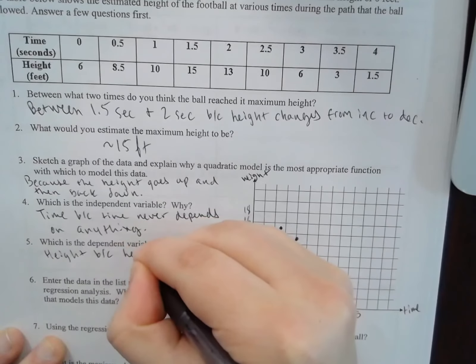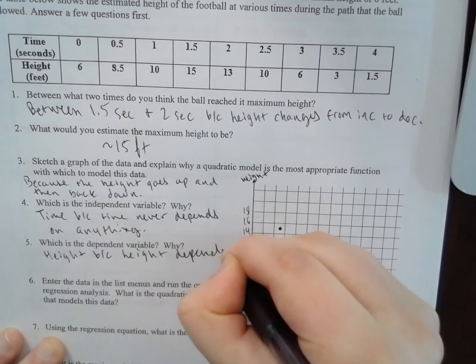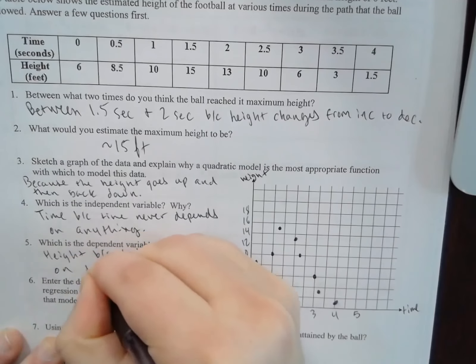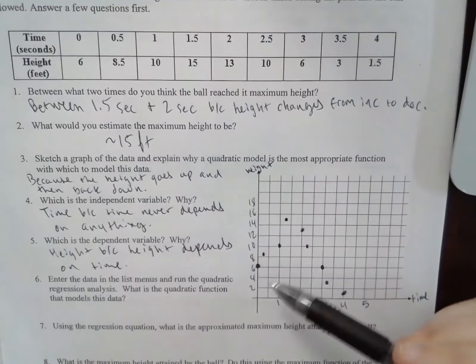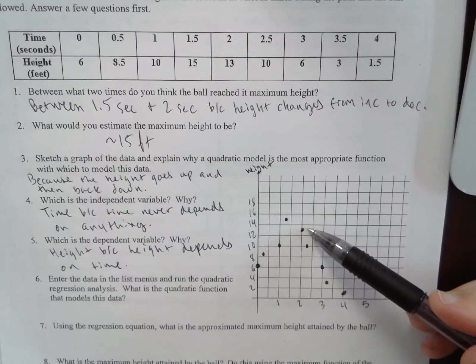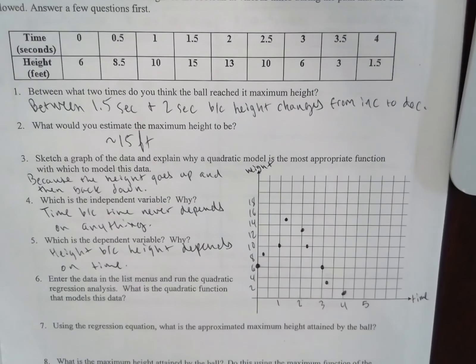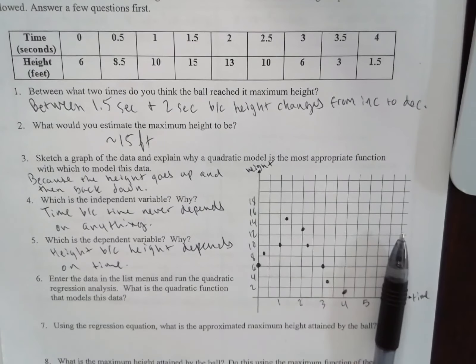Which is the dependent variable? Height. Because height depends on time. The height at 1 is different than the height at 2. So the height is dependent on what the time is.